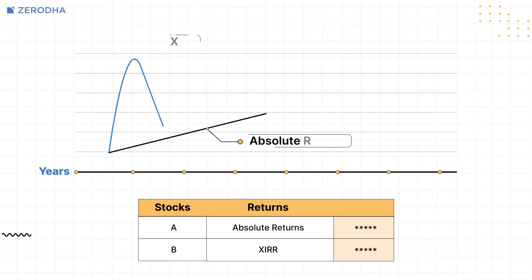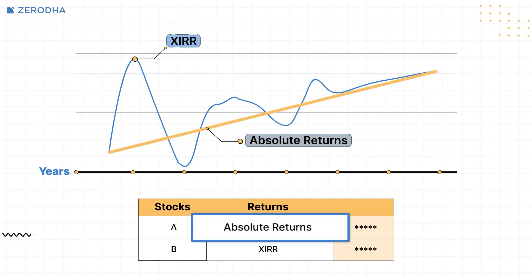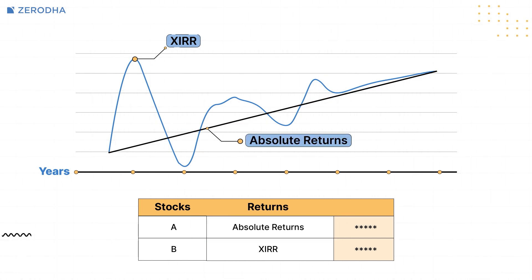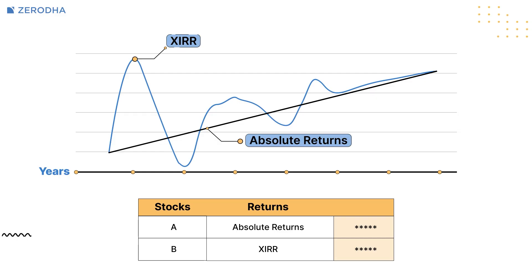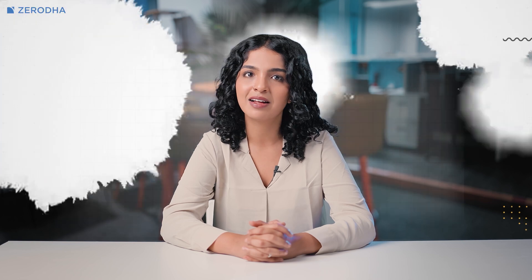When calculating returns on investments over multiple years, checking absolute returns does not provide an accurate picture. For better accuracy in calculating investment returns over a longer time horizon and multiple investments at different times, such as systematic investment plans, XIRR can be used.